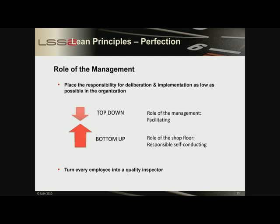The implementation of lean is not a top-down process. To succeed with lean, the discussions and implementation of continuous improvement must be as low as possible in the organization. Management can contribute to the implementation by facilitating lean — making training resources available on the shop floor and providing all operators time for the deliberation and execution of improvements.